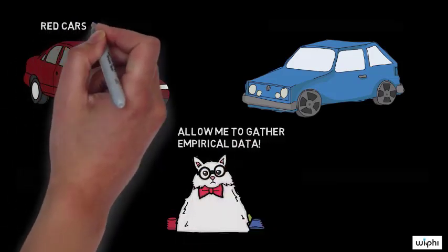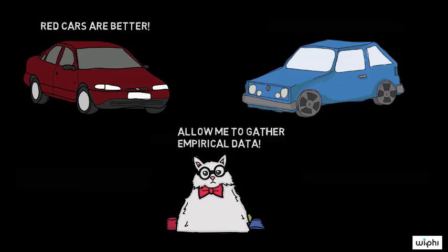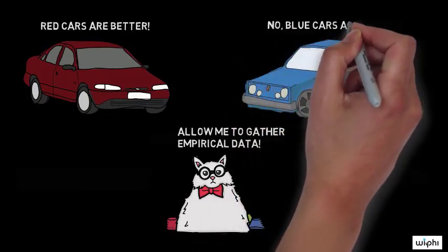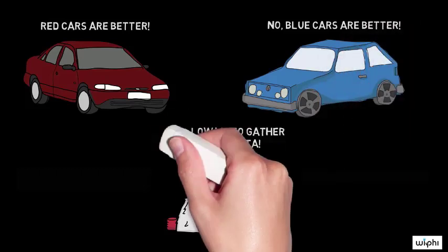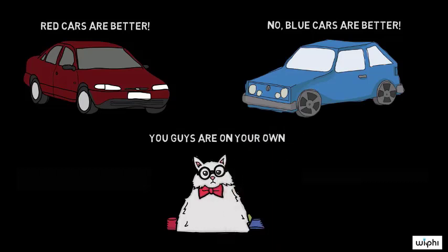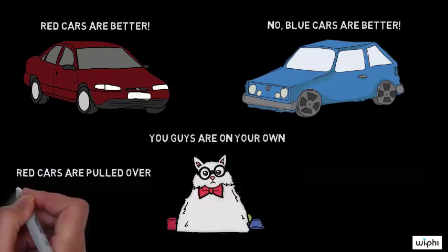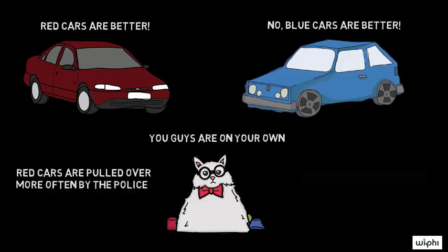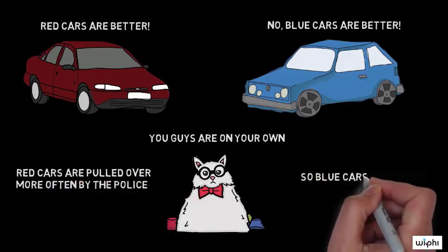So contrast this with a case in which you say that red cars are better than blue cars, and I say that blue cars are better than red cars. Here we're disagreeing over normative claims. So what we need to do is sort through that. For example, I might argue that blue cars are better than red cars because red cars get pulled over disproportionately by the police. Here we're working through a normative issue.